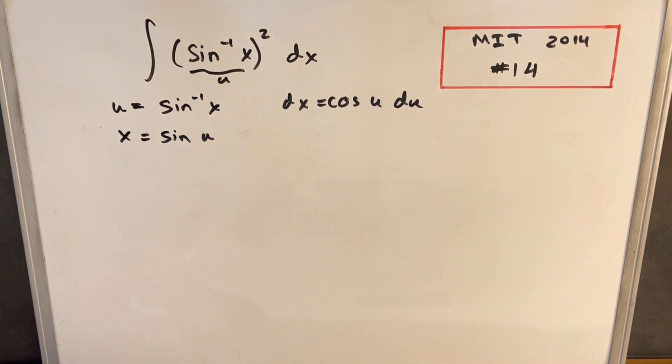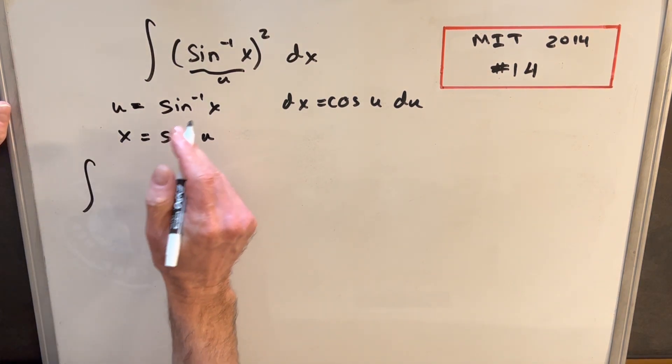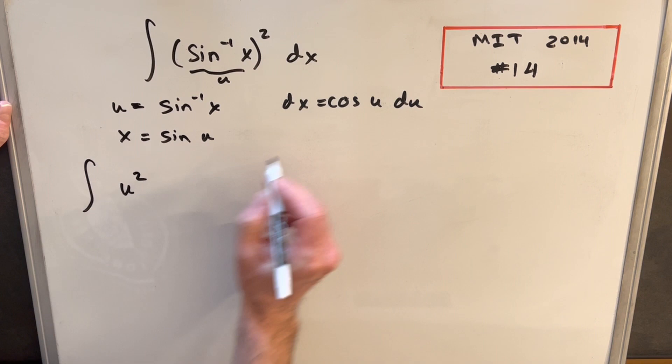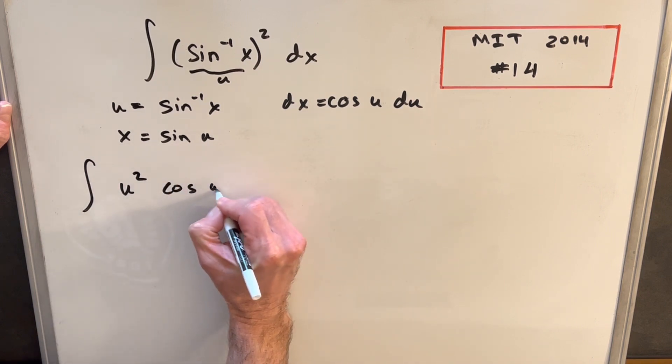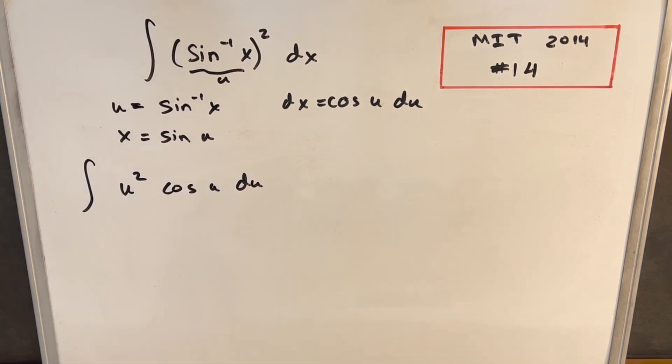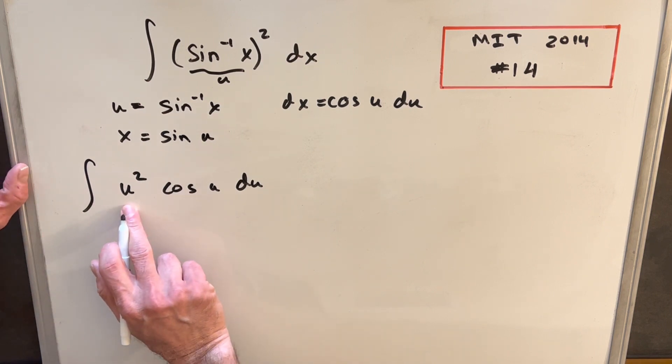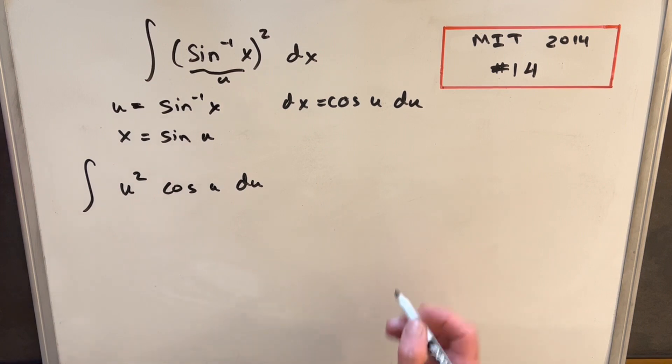Okay, so from here now we can do our substitution. We're going to have u squared, then we're going to have cosine of u du. And this will be perfect for integration by parts. We can differentiate this u squared and it'll reduce, we can differentiate it to zero.